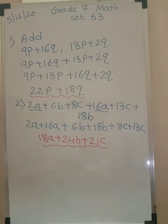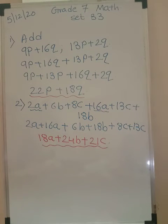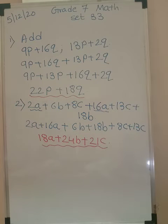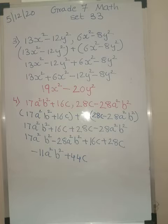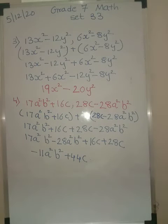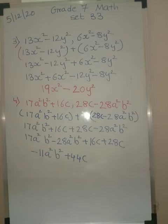So you just add the two expressions and write the answer. That is it. Now let's go to the third question. Third question: 13x squared minus 12y squared, and 6x squared minus 8y squared.